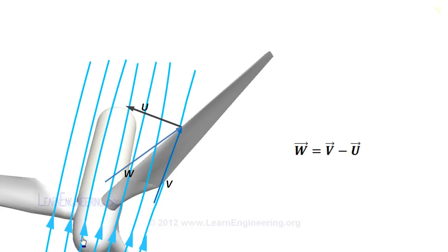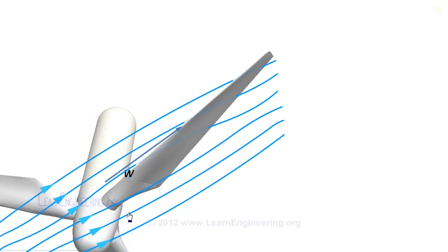If this is the actual flow velocity, a rotating blade will experience an apparent velocity of this at a particular cross section.